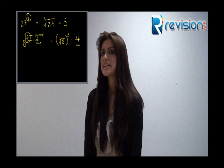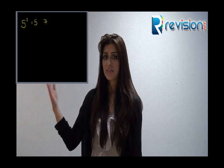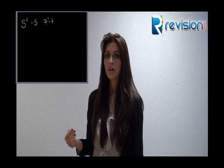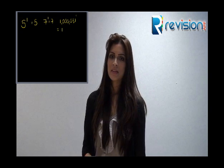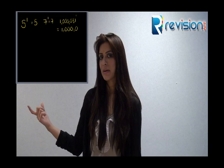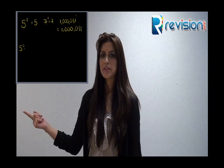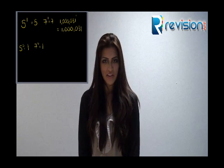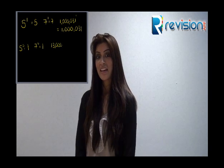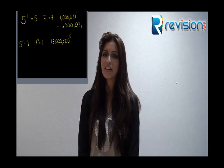What if our index is 1 or 0? 5 to the power of 1 is 5. 7 to the power of 1 is 7. 1,031 to the power of 1 is 1,031. The answer will always be the base number. What if we have a 0 as the index? 5 to the power of 0 is 1. 7 to the power of 0 is also 1. 13 million to the power of 0 is 1. Anything raised to the power of 0 is always 1.